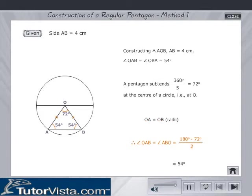Therefore, angle OAB is equal to angle ABO, which is equal to 180 degrees minus 72 degrees by 2. This is equal to 54 degrees.